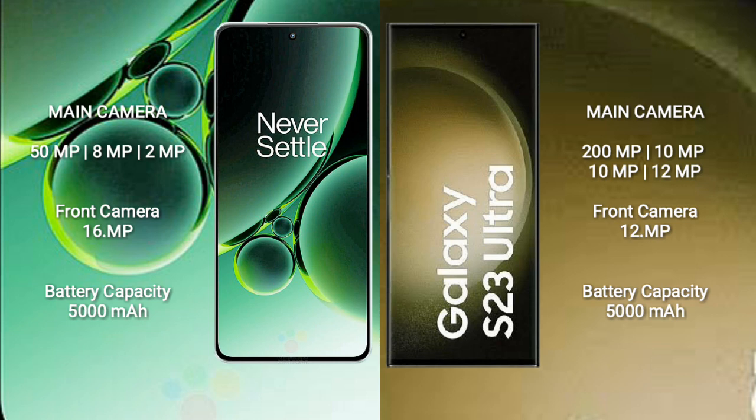OnePlus Nord 3 has a 5000mAh battery with 80W fast charging support. Samsung Galaxy S23 Ultra also has a 5000mAh battery, but with 45W fast charging support.